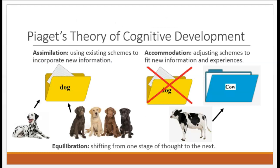Here's how Piaget thought this process worked. A toddler has a dalmatian for a pet and has learned that their pet is called a dog — it has four legs, a tail, and black and white spots. If the child sees a dalmatian in a book or at the park and says 'dog,' the parents confirm it. So the child has a mental scheme of what a dog is. But then they see a yellow lab — it has four legs and a tail — so the child points and says 'dog,' and the parents agree. The child now understands dogs can be different colors and sizes. This new information is added to their already existing scheme of a dog. This process is called assimilation — they're just filing new information into an already existing folder: dog.